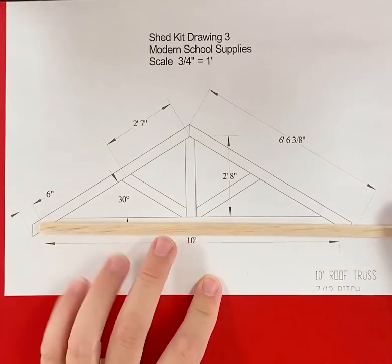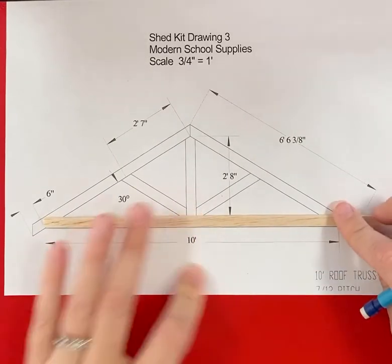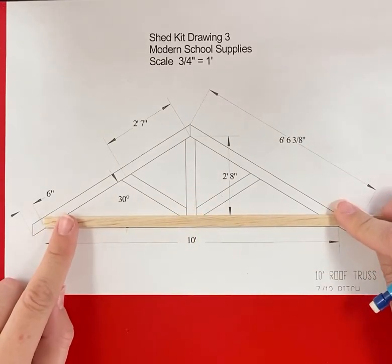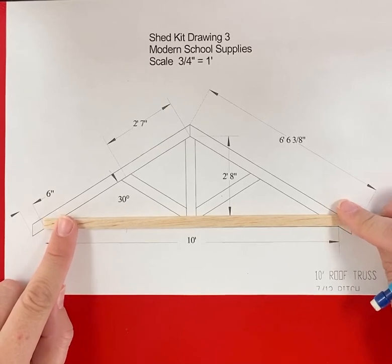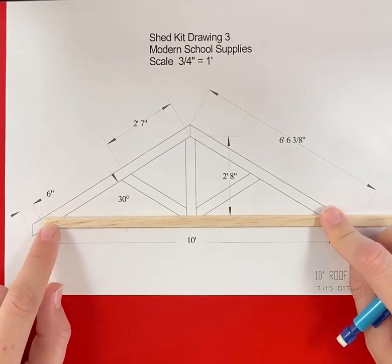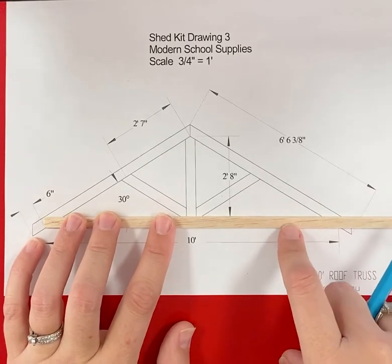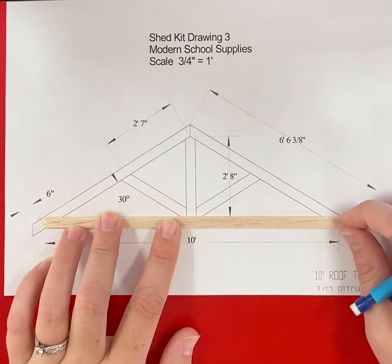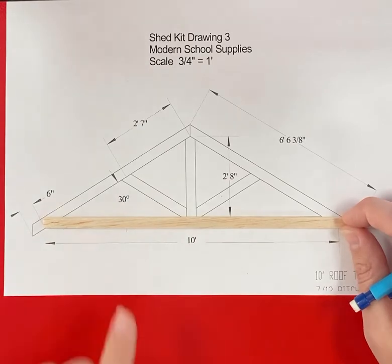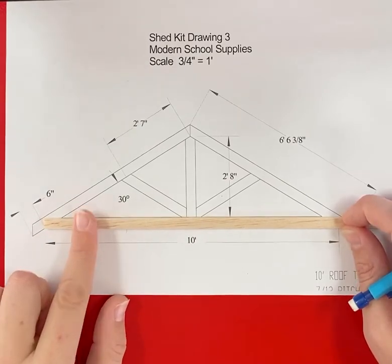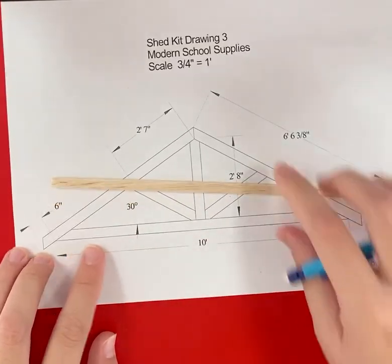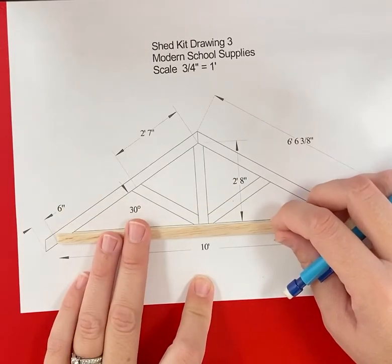So to do the angles, what I suggest is if you take your balsa wood and line it up with the long part of the wall or the long part of the angle. Now, this is just the one by four material. So I'm lining it up with the edge. So if I cut this bottom one first, I'm lining that up with the long part of the angle.